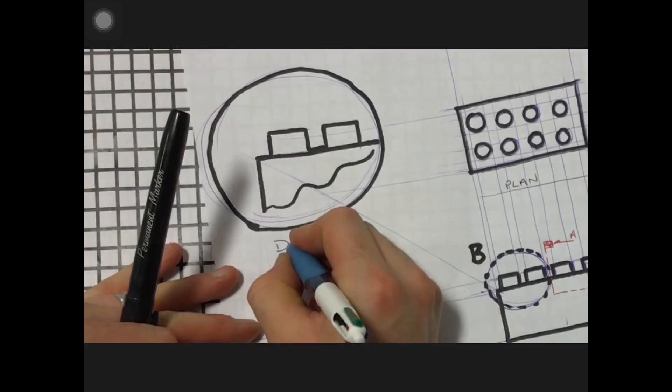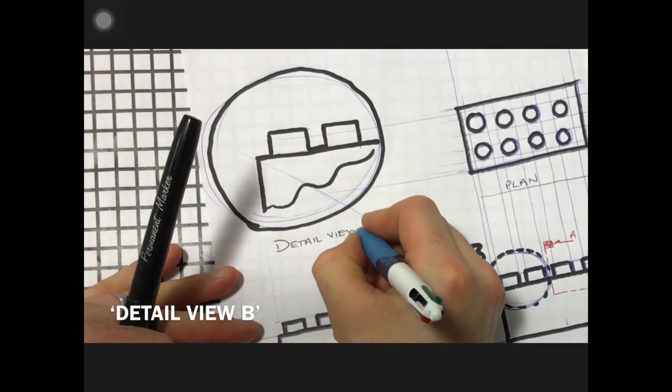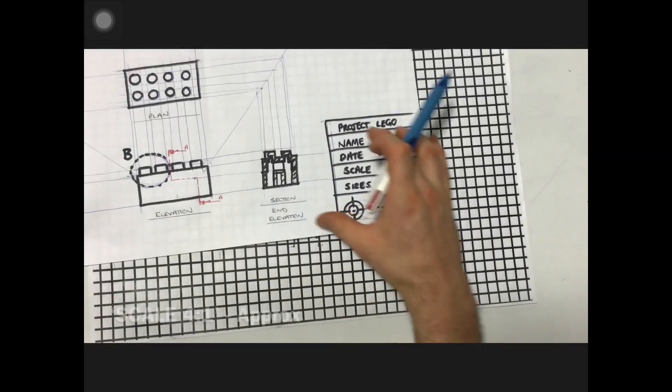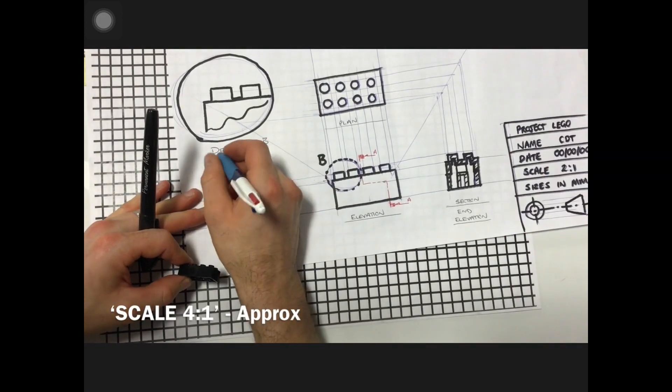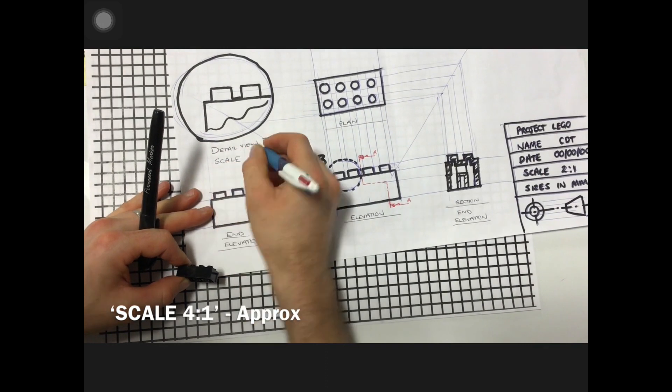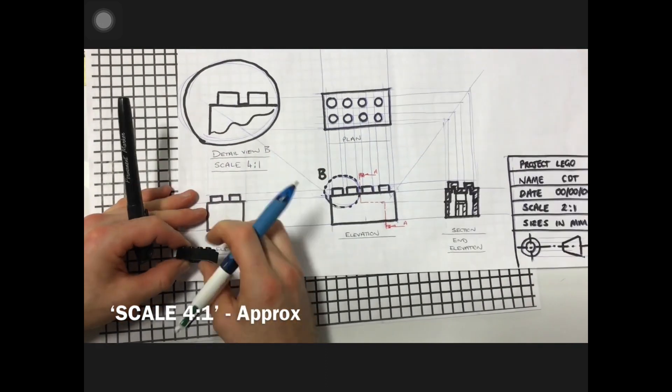We add in that title - this is detail view, and whatever letter it was given - this is detail view B, and then the scale that it now is, because it doesn't match the scale for the rest of the drawing, but it is a new scale that's been put in. So we just write in this is proportionately scaled at four to one - it's four times the size of the life-size object.